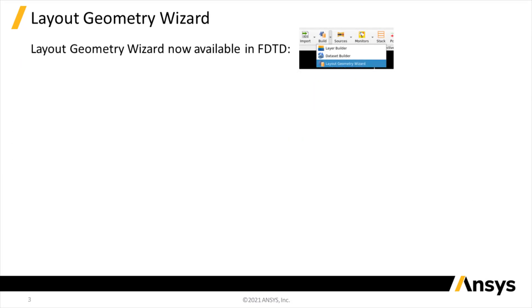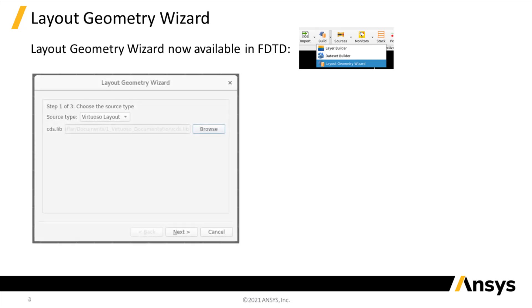Users now have the ability to set up this geometry through an import wizard in FDTD, found in the toolbar. In the wizard, the users first select the CDSLib library file.